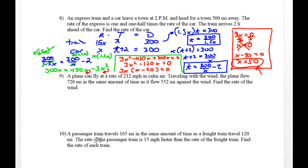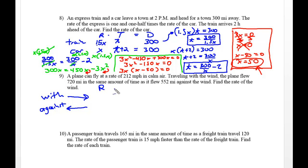Now we have a plane flying with the wind and then against the wind. We'll draw two arrows to show that going with the wind is in one direction and against the wind is the other. Setting up rate times time equals distance: a plane can fly at 212 miles per hour in calm air, traveling with the wind the plane flew 720 miles in the same amount of time it flew 552 miles against the wind. Find the rate of the wind.